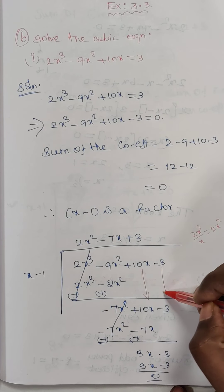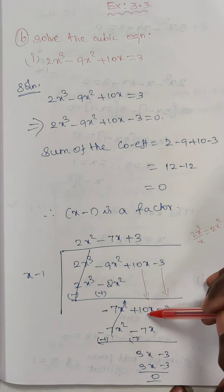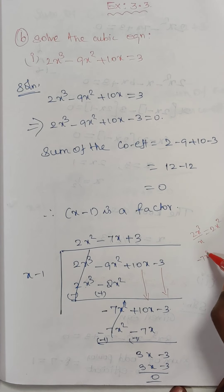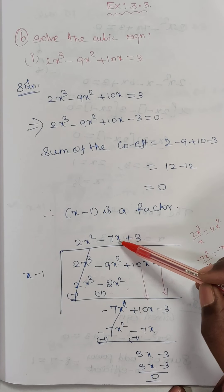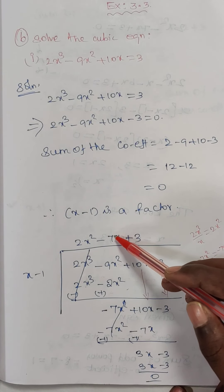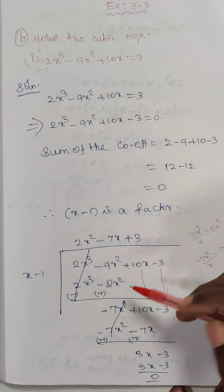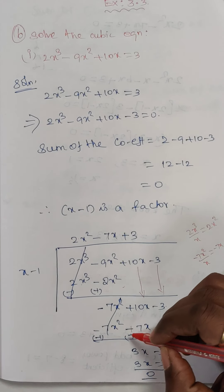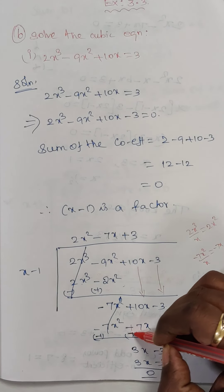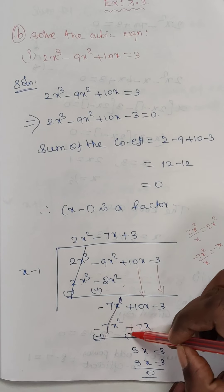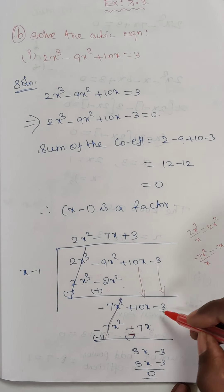Bringing down the next terms: minus 7x² plus 10x minus 3. Then minus 7x² divided by x equals minus 7x. Multiply: minus 7x times x gives minus 7x², and minus 7x times minus 1 gives plus 7x. Changing signs and cancelling, we get 10x minus 7x equals 3x. Bringing down minus 3.